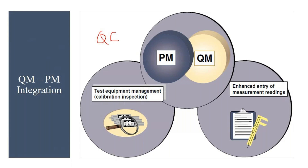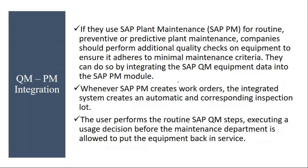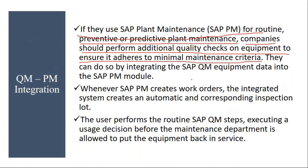In QM we call it calibration inspection, and the same business process in the PM module is called test equipment management — that is the integration basically. If they use SAP PM for routine preventive or predictive planned maintenance, companies should perform additional quality checks on equipment to ensure it adheres to minimal maintenance criteria.